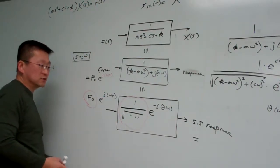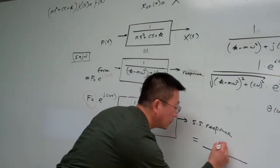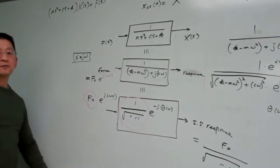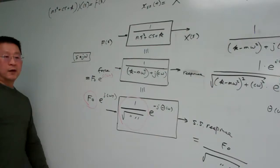So that is equal to f zero divided by this one. And then the phase angle, this is a multiplication of this number with this number, so their phase angle is simply added up together.